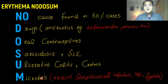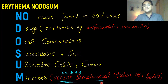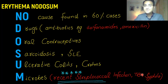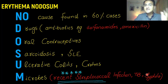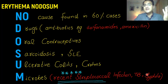Continuing the mnemonic: S — sarcoidosis and SLE are associated with erythema nodosum. U — ulcerative colitis and Crohn's disease can cause erythema nodosum. M — microbes: recent streptococcal infection is one of the most important causes, and infections like TB can also cause erythema nodosum.